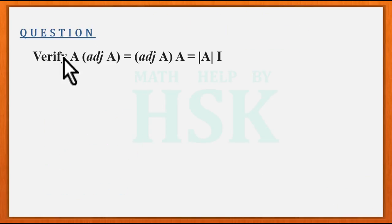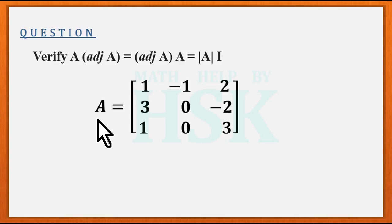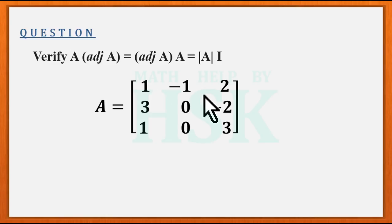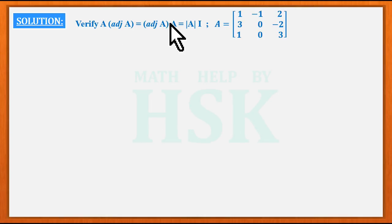Hello friends. The question is to verify that A into adjoint of A is equal to adjoint of A into A, which is equal to the determinant of matrix A into the identity matrix I. The given matrix A is: 1, -1, 2 / 3, 0, -2 / 1, 0, 3. Now let us see how we are going to verify that this equation is correct.